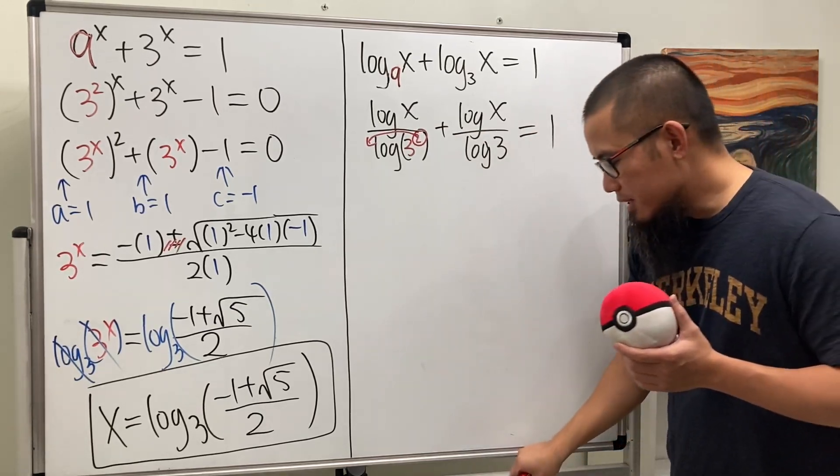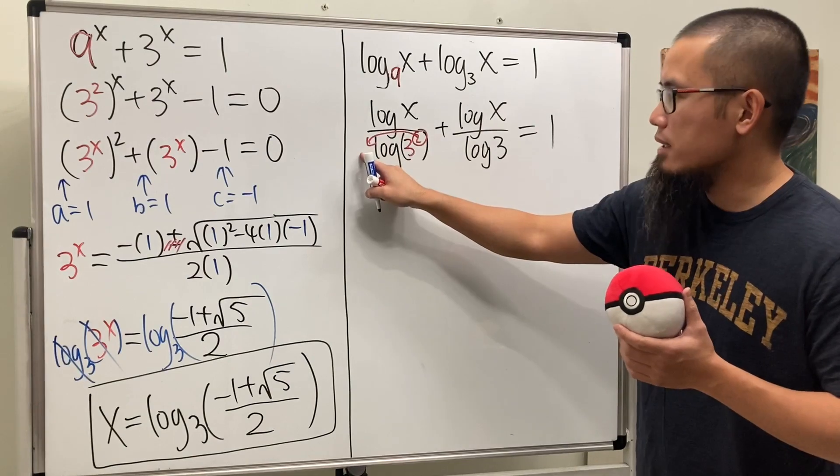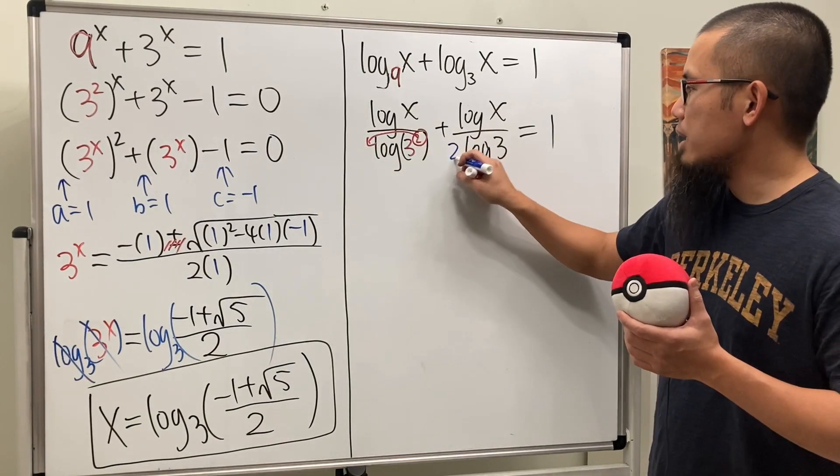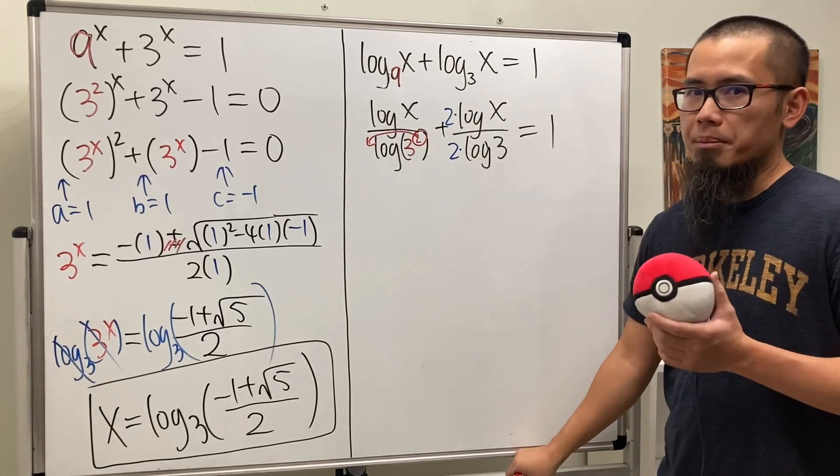For the second one we are going to rewrite it as log of x over log of 3, and this is equal to 1. After we brought the 2 to the front, the bottom is just 2 times log 3. Let's go ahead and multiply by 2 so that we can combine the fractions.